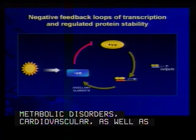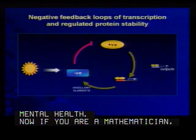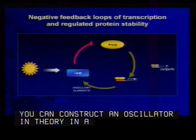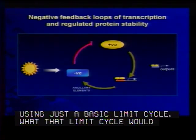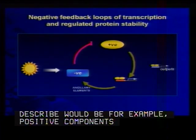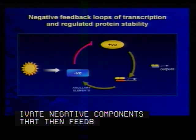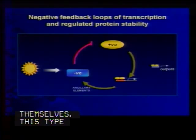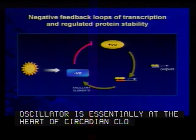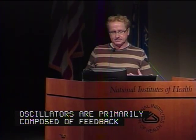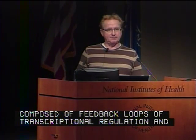If you're a mathematician, you can construct an oscillator in theory in a cell very simply using just a basic limit cycle, where positive components activate negative components that then feed back and inhibit themselves. This type of limit cycle oscillator is essentially at the heart of circadian clocks in all organisms. What appears to be the case is that these limit cycle oscillators are primarily composed of feedback loops of transcriptional regulation, with regulated protein turnover superimposed on top.